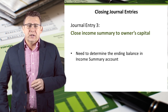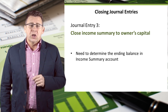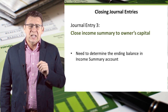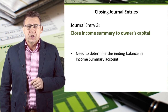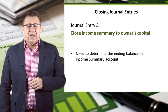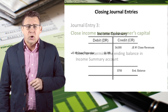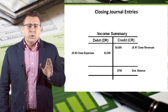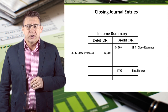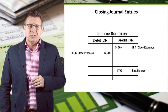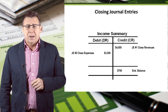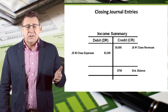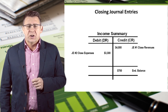The third closing journal entry is to close income summary to owner's capital. To do this, we need to figure out the ending balance in income summary. Once we've posted the first two journal entries, we can determine the balance in income summary. The balance should equal our net income. In this case, the balance is $700 credit.